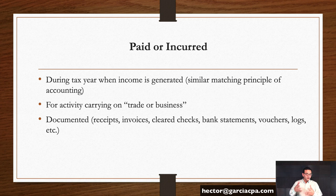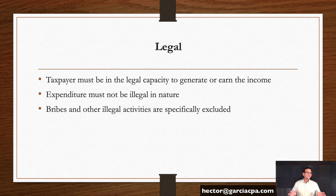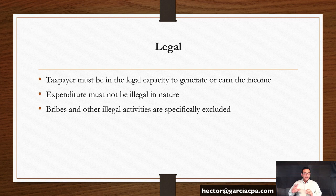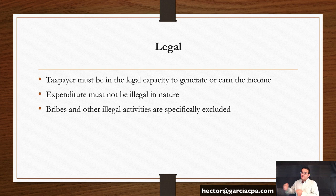The last one is legal — we can describe legal as not illegal. The taxpayer must be in the legal capacity to generate income and to make that expenditure. For example, if I'm an unlicensed doctor generating income from medical consultations, any expenses I try to claim wouldn't be deductible, although the income would still be taxable. Also, if the expenditure itself is illegal — they specifically talk about government official bribes — that's not going to be deductible at all.